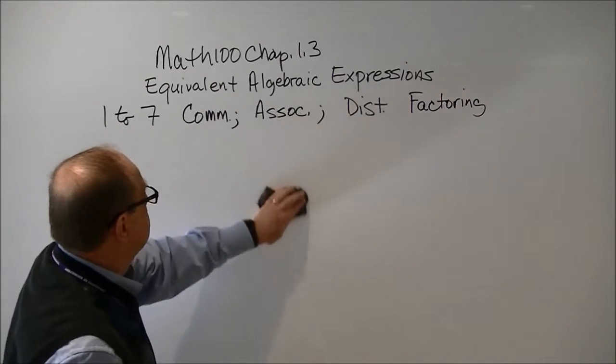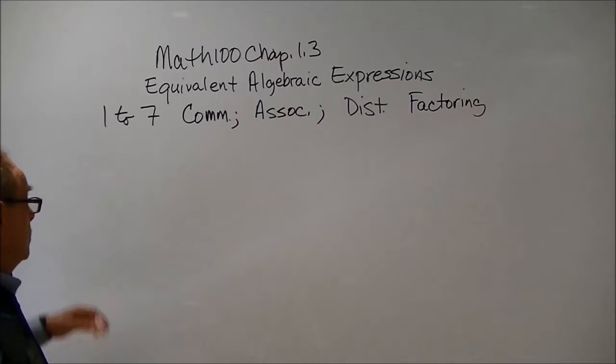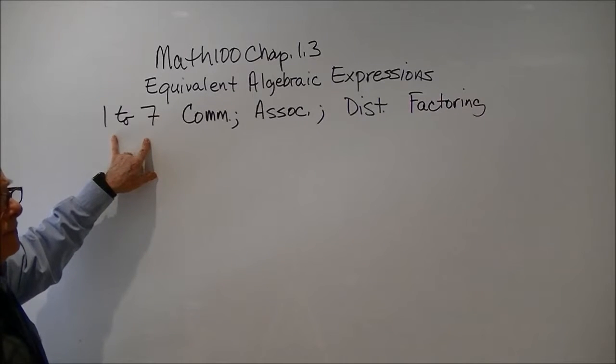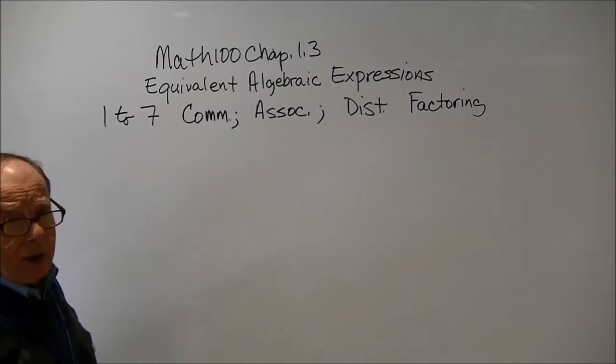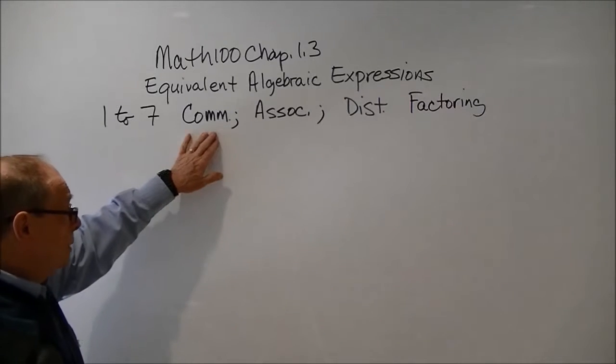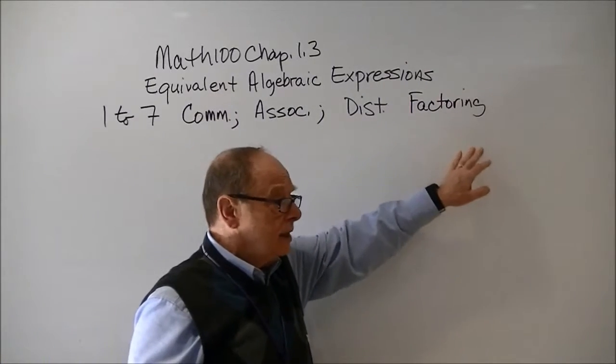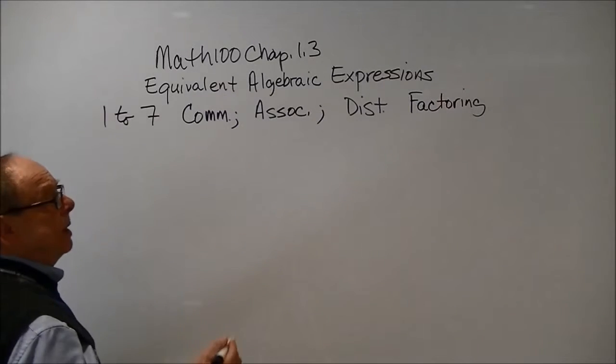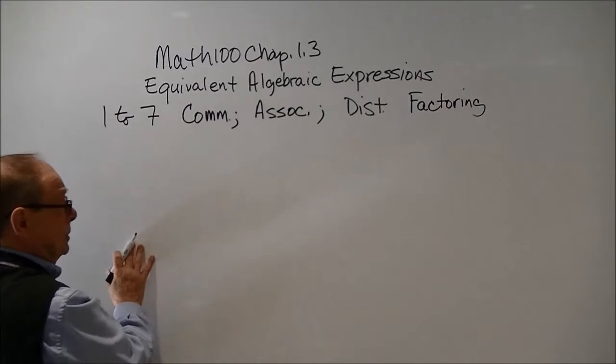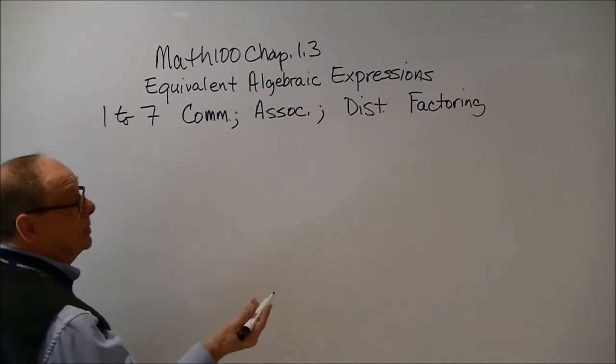So what we're doing here is we're going to look at equivalent algebraic expressions. And what they're doing in examples one through seven is they want you to become familiar with these basic laws: the commutative law, the associative law, the distributive law, and then this is actually a process, factoring. So I'll just give you a little background, and then you're going to have to apply as you do the answers, keeping in mind they are in the back of the book or back of the chapter.